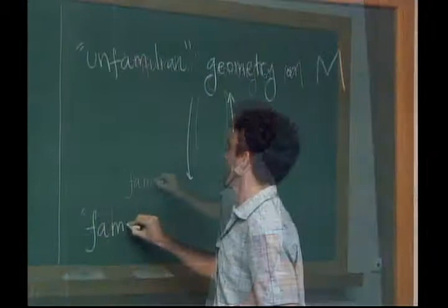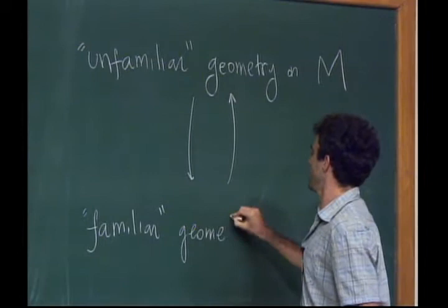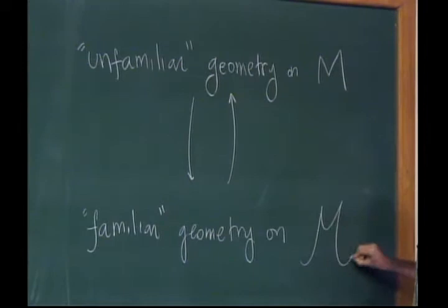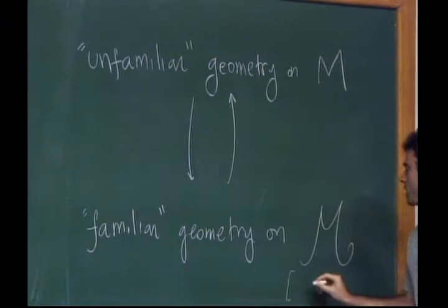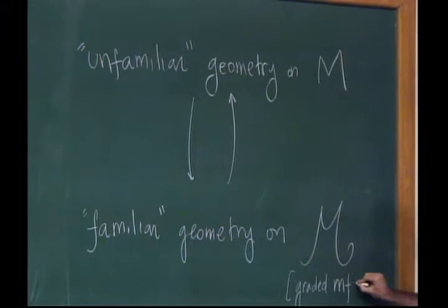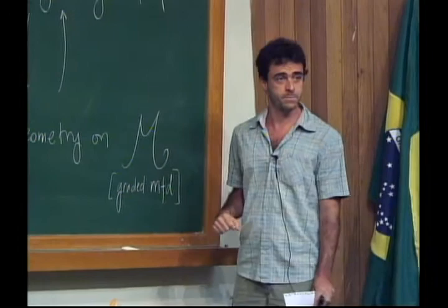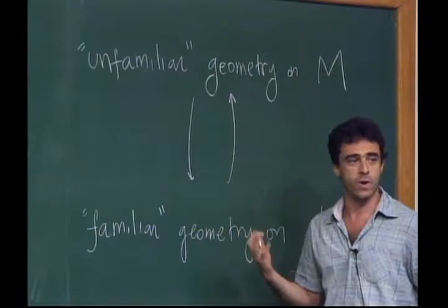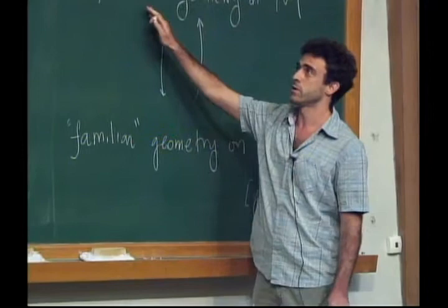There's a trade-off: instead, or equivalently, you can study familiar geometry on something I will denote by a curly M, which is not a usual manifold anymore, but rather an object called a graded manifold. The type of graded manifold I'll be talking about is very close in spirit — not exactly the same — to what physicists call supermanifolds. Familiar to me will be symplectic, and unfamiliar will be something I'll describe now.